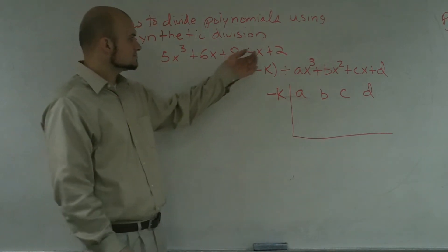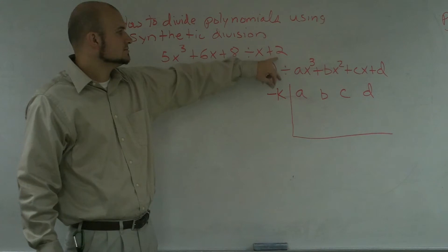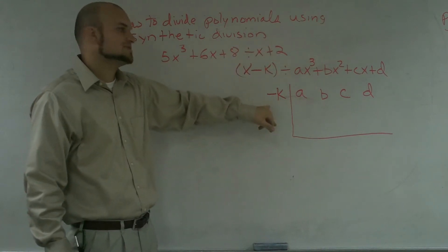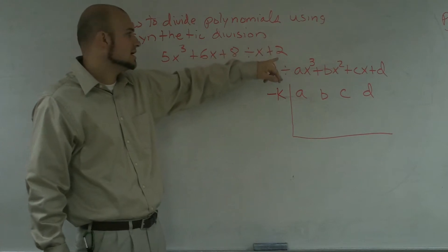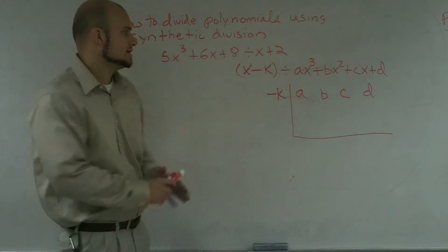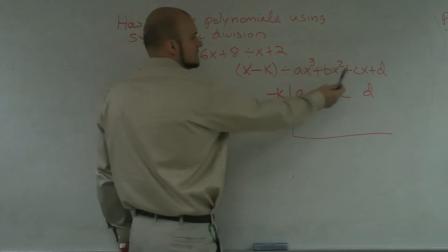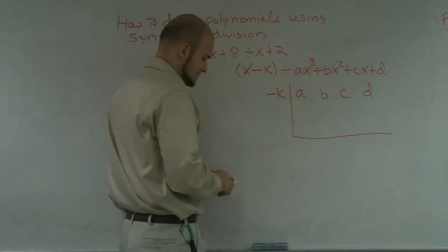So what we're going to do is you're going to determine your k, which would be 2, and then you have to take the opposite of it because the format is x minus k. So you're actually going to take the opposite of your k right there. And then you're going to take the coefficients of your other polynomial and put them in this area.